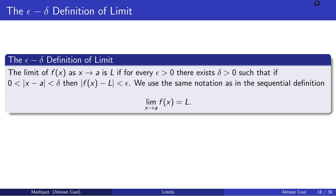The limit of f of x as x approaches a is L if for every epsilon greater than zero there exists delta greater than zero such that if zero is less than the absolute value of x minus a is less than delta, then the absolute value of f of x minus L is less than epsilon. We use the same notation as in the sequential definition to denote this property: limit as x goes to a of f of x equals L.